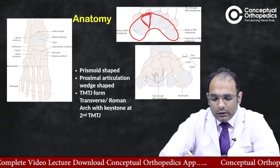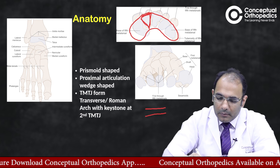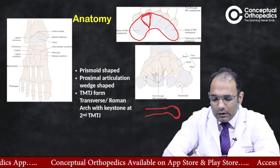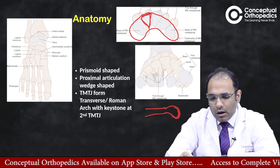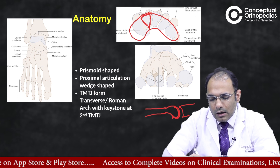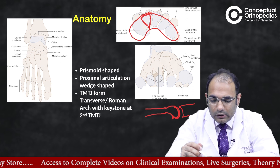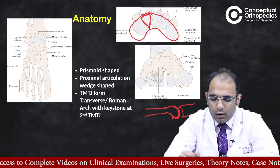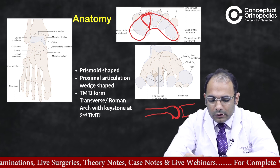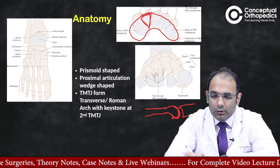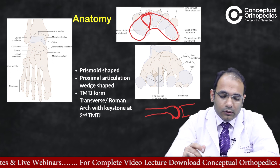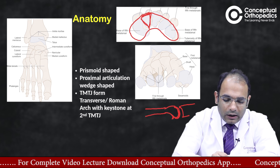Looking at the distal articulation: the articular surface of the metatarsal extends a bit more distally and also further posteriorly on the plantar side than you might expect. The flexor tendons pass just underneath that surface. This is why in a metatarsal neck fracture, the distal articular surface or distal fracture fragment tends to displace plantarward due to the injury mechanism.